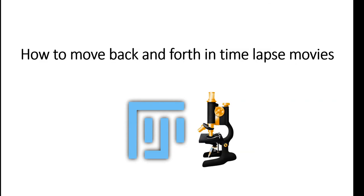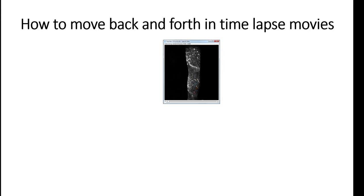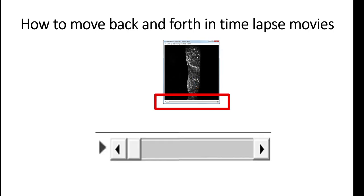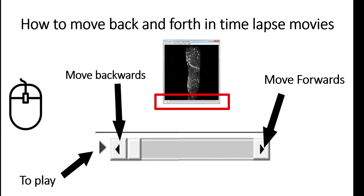So, how to move back and forth in a timelapse movie using Fiji or ImageJ — it's very easy. The first thing you do is open your movie. Here in the bottom of the movie you have three arrowheads. Using your mouse, if you left click the first one you will move backwards, if you left click the second one you will move forward, and if you left click the third one you can play the movie.